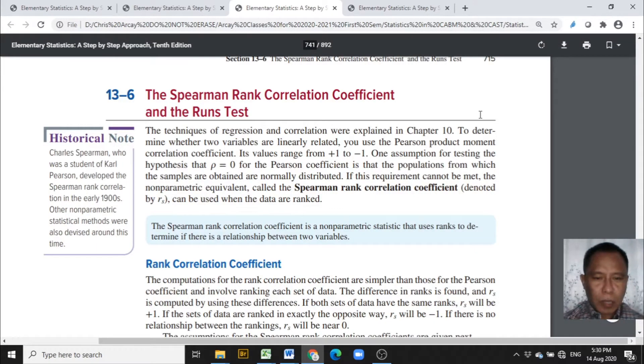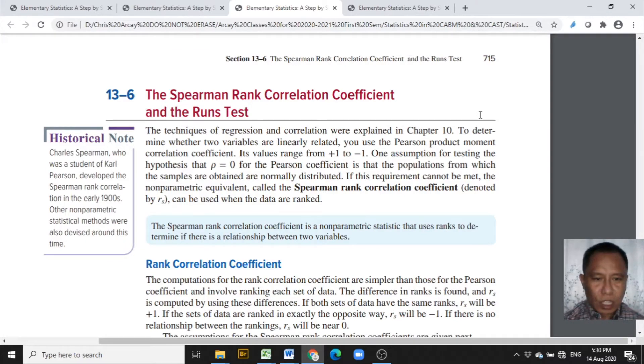The non-parametric statistics test to be presented in this video is the Spearman rank correlation coefficient. The Spearman rank correlation coefficient is the non-parametric counterpart of the Pearson product moment correlation. This is used when the assumption of the Pearson coefficient is not met. The Spearman rank correlation coefficient is a non-parametric statistic that uses ranks to determine if there is a relationship between two variables.